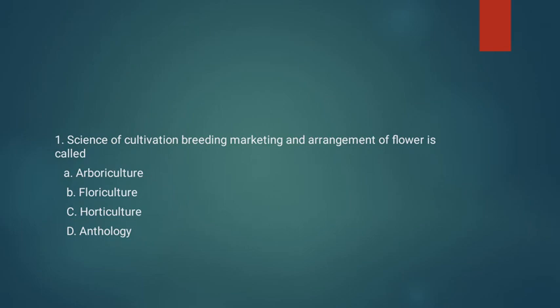First question: the science of cultivation, breeding, marketing and arrangement of flowers is called. Option A: Arboriculture. Option B: Floriculture. Option C: Horticulture. Option D: Anthology.